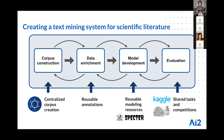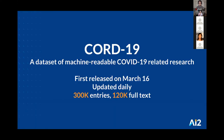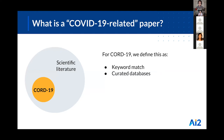I'll start by talking about the CORD-19 corpus, which attempts to centralize the process of corpus creation. CORD-19 is a dataset of structured, machine-readable COVID-19 research papers. We released the first iteration back in March in collaboration with several partner organizations. Since then the dataset has grown a lot — it now includes more than 300,000 entries, with full text available for about 120,000 documents, and is updated daily.